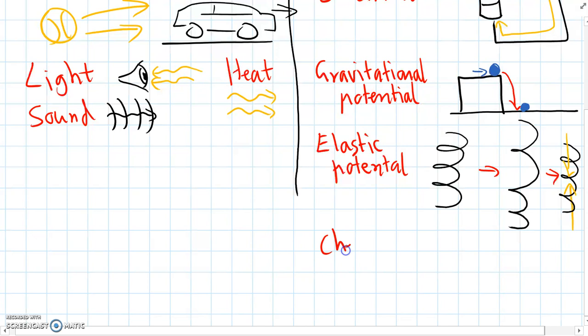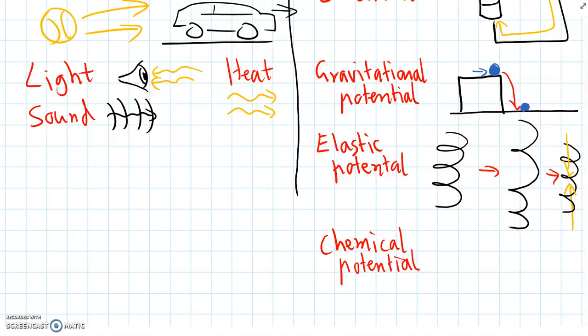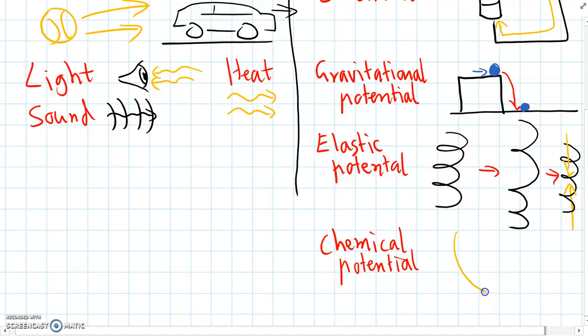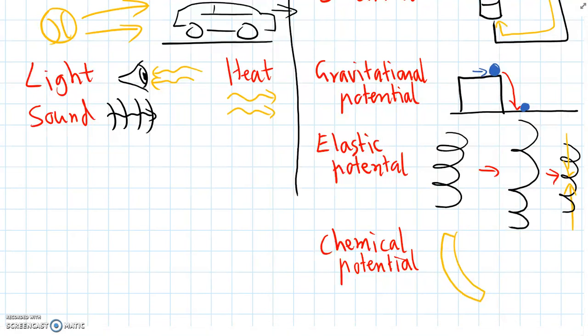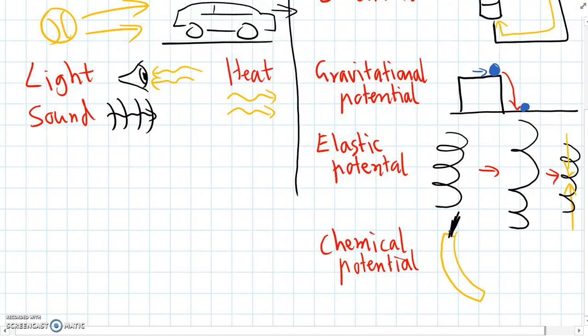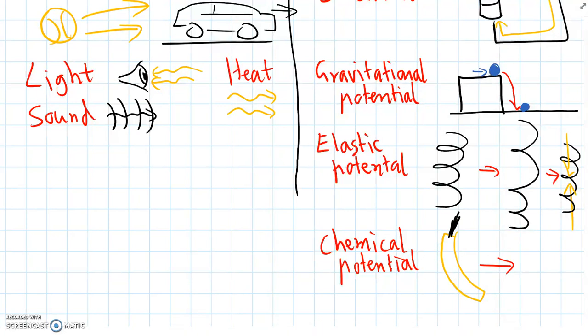We also have chemical potential energy, which is energy that's stored in foods and fuels. So something like a banana. When we eat a banana, our bodies break down the chemicals and we get energy out of it, and that lets us use our bodies for things like running.